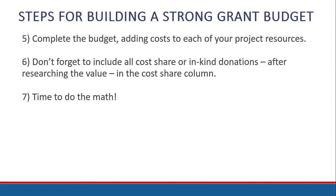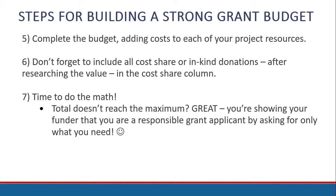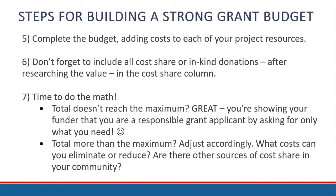Now it's time to do the math. If the total doesn't reach the maximum amount you may be awarded — great! You're showing your funder that you are a responsible grant applicant by only asking for what you need. If the total equals more than the maximum allowed, it's time to adjust. What costs can you eliminate or reduce? Or are there other sources of cost share in your community that you haven't thought of yet?